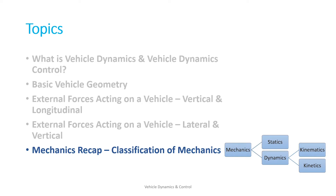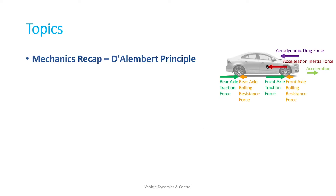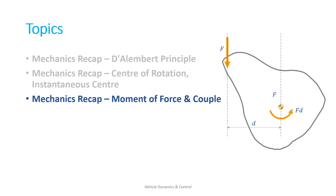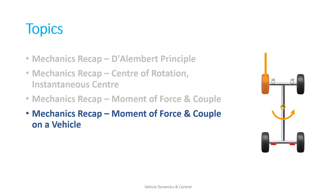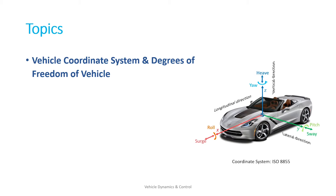There is a short mechanics recap session — first we will see the classification of mechanics, then Newton's second law, then D'Alembert's principle. Then we will see the concept of center of rotation and instantaneous center, followed by moment of force and moment of couple, and a possible situation where these act on a vehicle. And then we will look into the right-handed coordinate system and how it is placed in a vehicle, followed by a detailed look at the vehicle coordinate system and degrees of freedom of the vehicle.